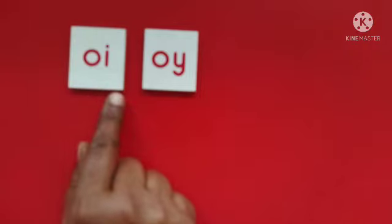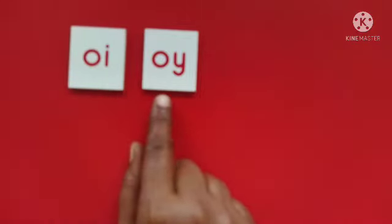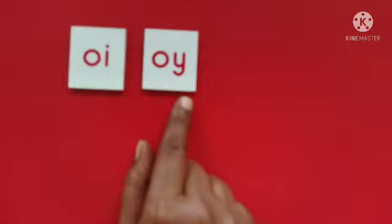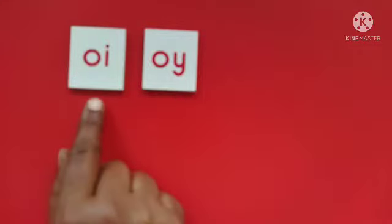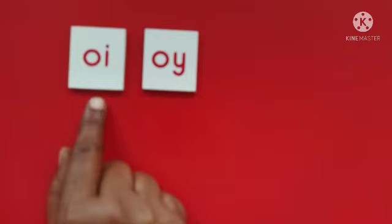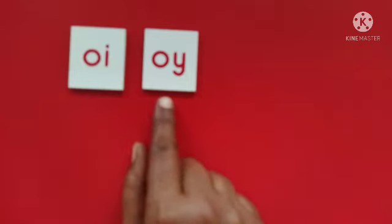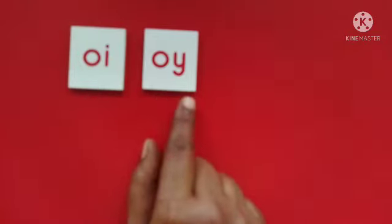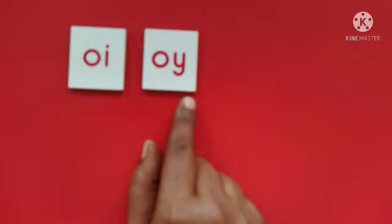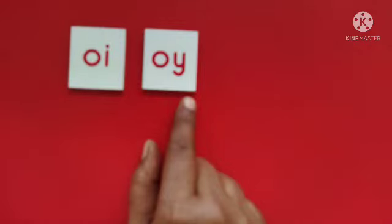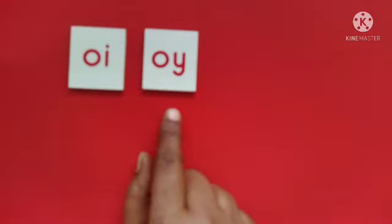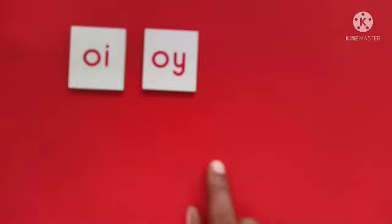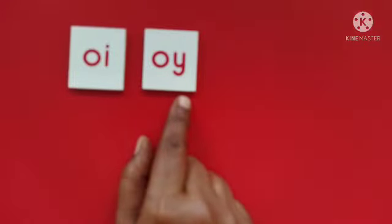O and I make 'oi.' O and Y also make the 'oi' sound. In some words we write O-I for the 'oi' sound, and in some words we write O-Y for the 'oi' sound. We call them homophones — the sound remains the same but we write different letters. Let us see the words with O-Y as 'oi.'